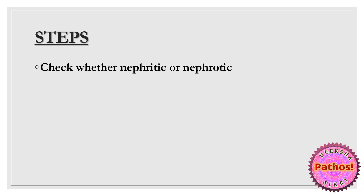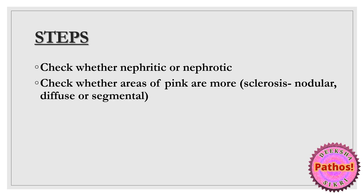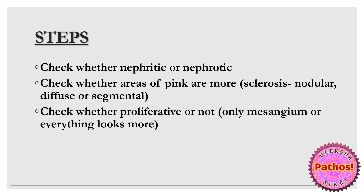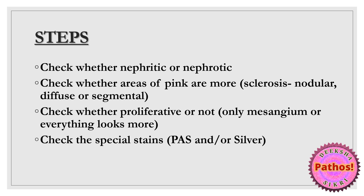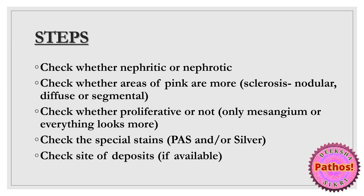Anytime you get a light microscopy photograph of any renal glomerular disorder, go stepwise and the diagnosis becomes simple. First check whether it is nephritic or nephrotic from clinical history to rule out a couple of options. Check whether areas of pink are more — if they are, without increase in cells, then check whether it is nodular, diffuse, or segmental. Then check whether proliferation is only in the mesangium or involves both cell types. Then look at special stains like PAS or silver for any special appearance — for example, spike and dome or tram track.